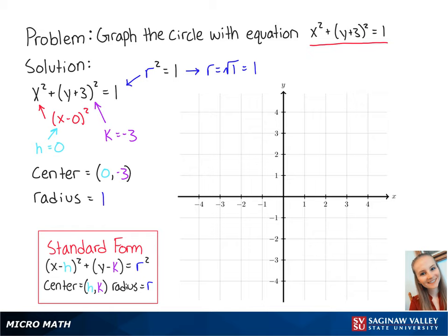Now we can graph the points of the circle. The center is at 0, negative 3 and because the radius is 1, our points are 0, negative 2, 1, negative 3, 0, negative 4, and negative 1, negative 3. Connecting these points, we get the graph of the circle. And this is the final answer.